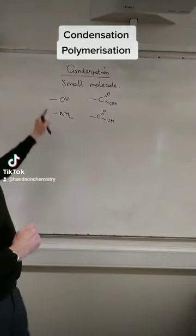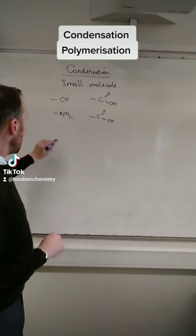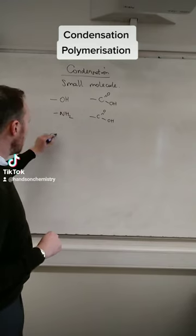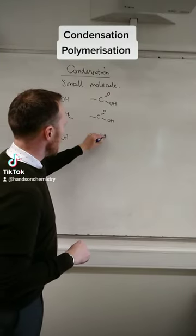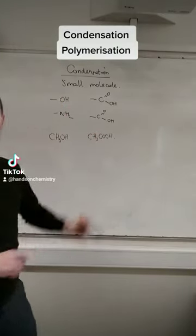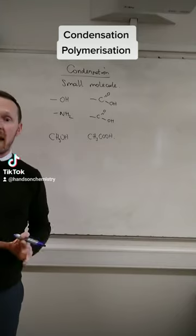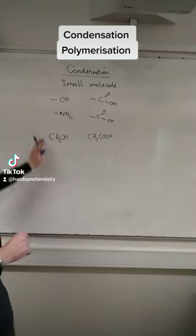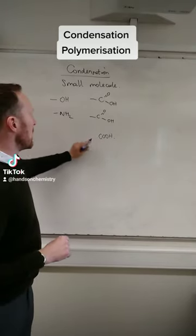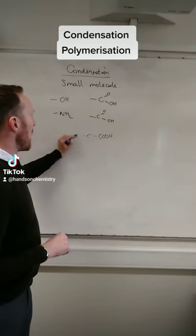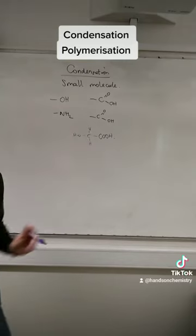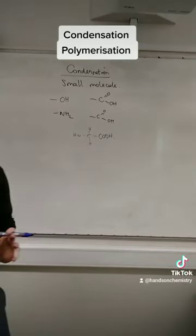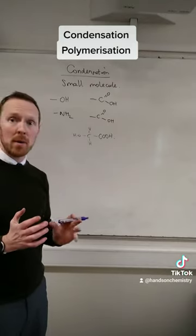What are you looking for? Well, let's say I've got an alcohol — CH₃OH — and a carboxylic acid — CH₃COOH. They will react together to give me an ester. But if I've got a molecule that's got an alcohol and a carboxylic acid on it, well this is going to react with itself. This is polymerization.